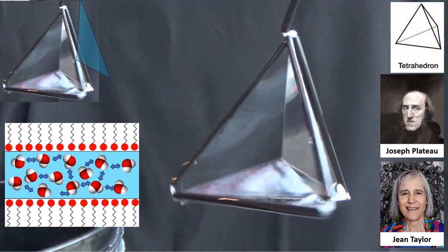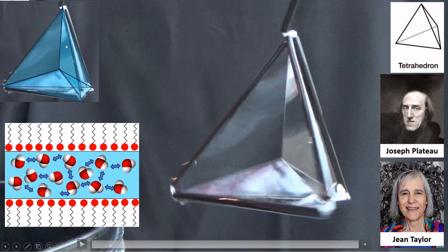Here was one of Plateau's laws: three films would meet along an edge called a plateau border, like those three first ones met along this border, all at 120 degree angles. And then four such borders could meet at a single point.